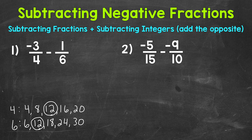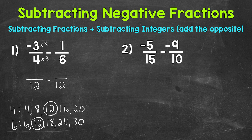So 12 is our least common multiple and therefore our least common denominator. Now we need to rename our fractions with that common denominator of 12. These are going to be equivalent fractions, so we are not changing the value of the problem at all. Starting with negative three fourths: how do we get four to equal 12? Four times three is 12, so whatever we do to the bottom, we do to the top. Negative three times three is negative nine, so negative nine twelfths is equivalent to negative three fourths.